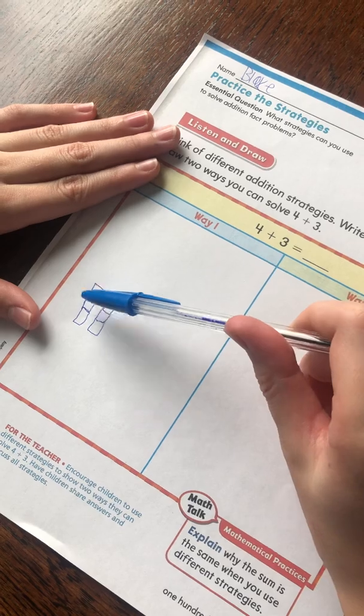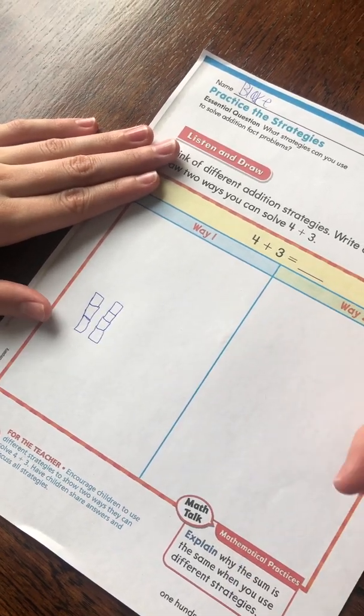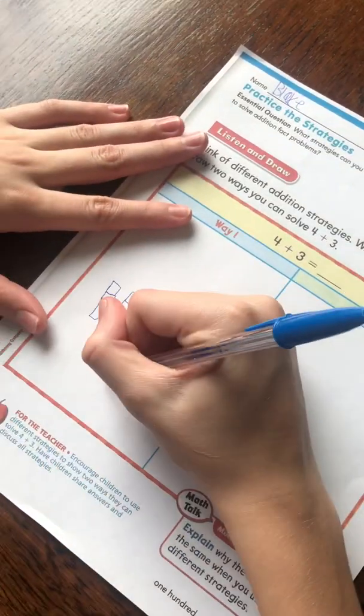1, 2, 3, 4, 5, 6, 7. Okay, so let's just write a 7 right here.